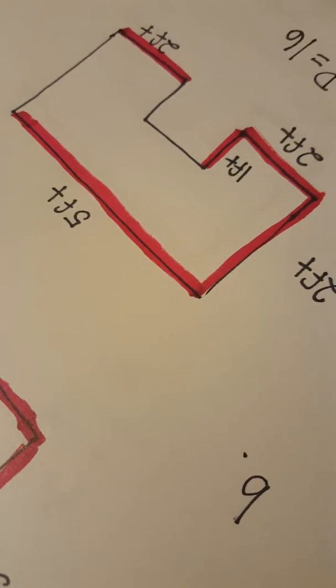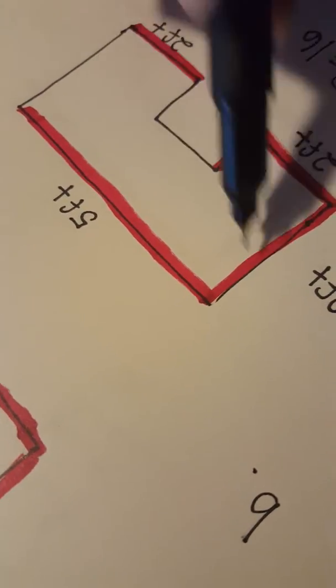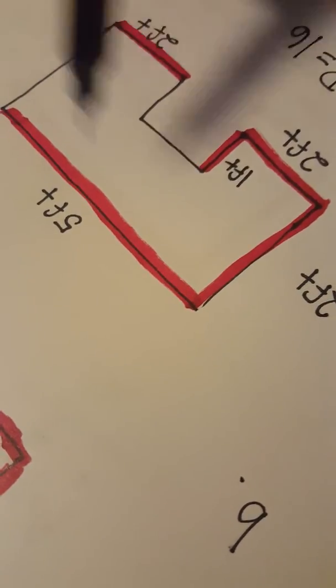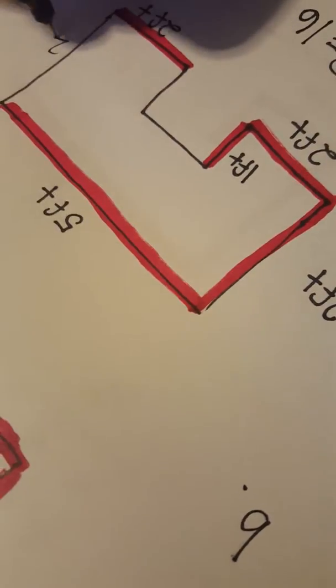So now let's take a look at what we don't know. Well, we don't know this side, but I know that these two sides are parallel to each other, so they must be the same size. So if this is 2 feet, this is going to be 2 feet.